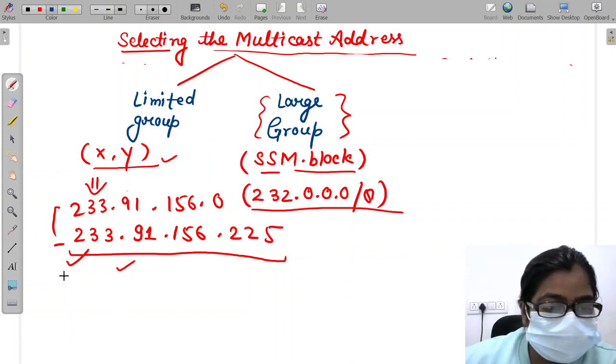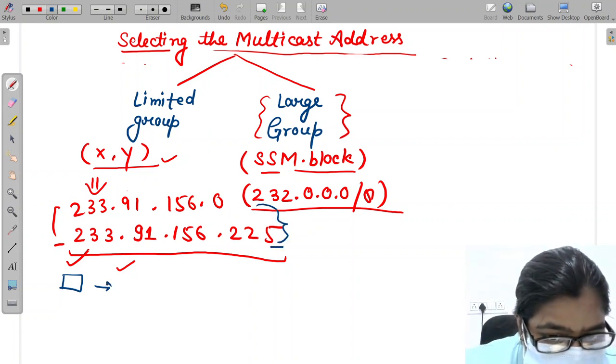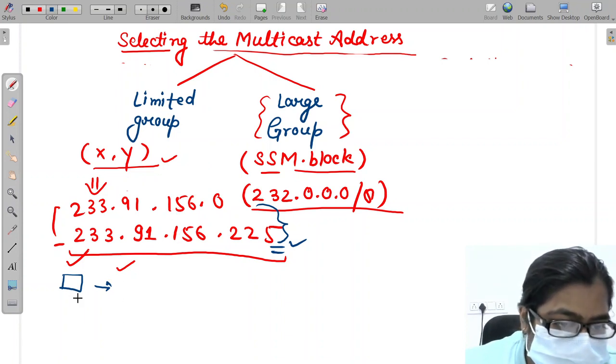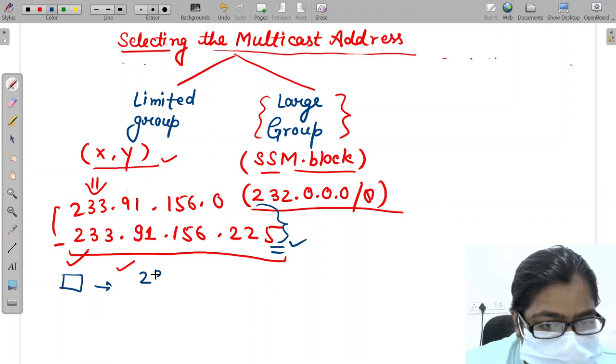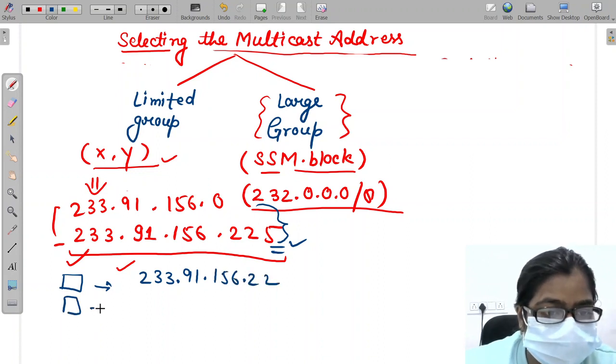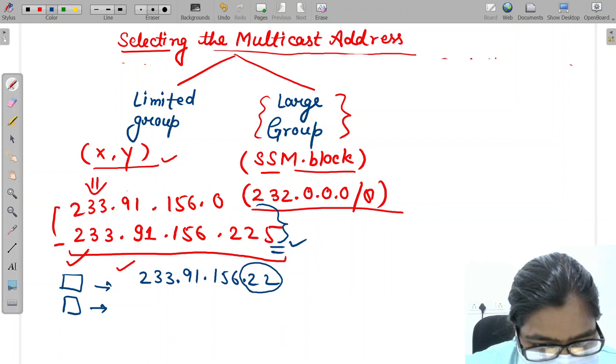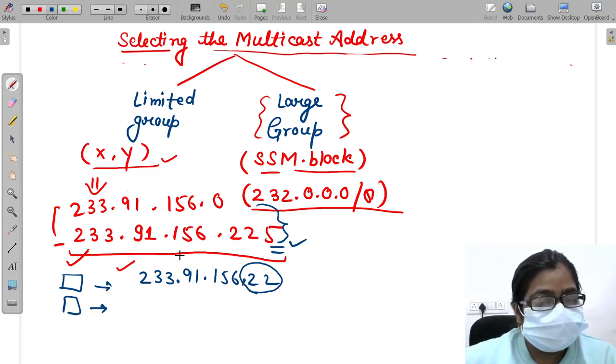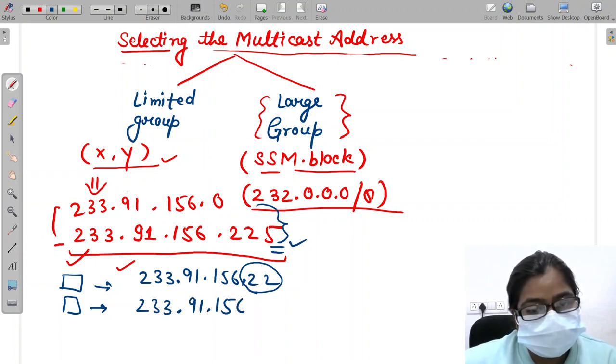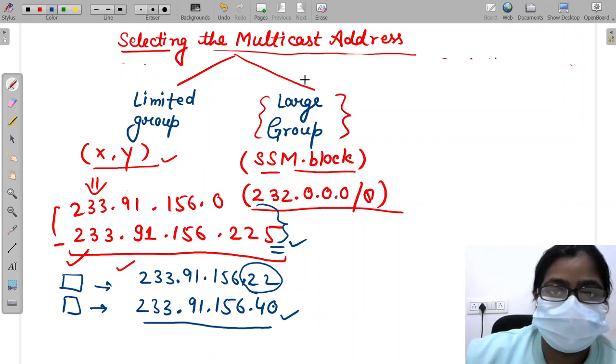Let's take an example that in a college a professor wants to take a class. An address which will be in between these will be assigned to the professor and which is available. Let's say there is one professor taking class at the multicasting address 156.22. If a second professor is requesting for this multicasting address, this address will not be provided and an address which is free will be provided. Let's say address 40 has been appointed to the next professor. So it was all about selecting the multicast address.